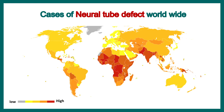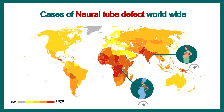If you look at the global map, third world countries are more affected where vitamin, mineral, or nutrition deficiency is a big problem, whereas the incidence of neural tube defects is less common in the developed world.